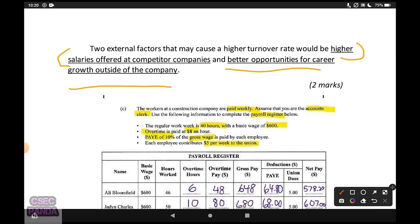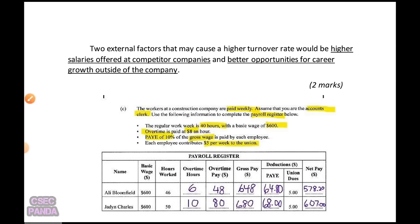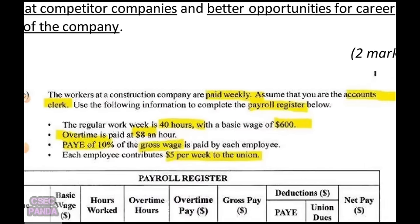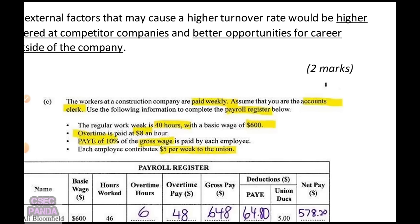I said it could be that higher salaries were being offered at competitor companies, or that there were better opportunities for career growth outside the company — for example, if a competitor was sending staff to work in a country you always wanted to move to. The economic climate could also be an external factor, making someone think they should switch fields entirely. A lot of that happened during the pandemic when people found they'd rather be doing something else.